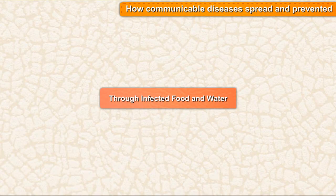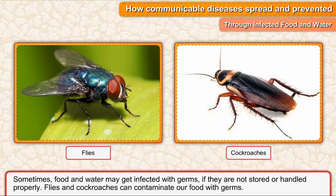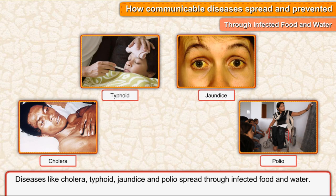Through infected food and water: Sometimes food and water may get infected with germs if they are not stored or handled properly. Flies and cockroaches can contaminate our food with germs. Diseases like cholera, typhoid, jaundice, and polio spread through infected food and water.